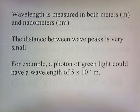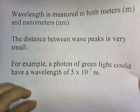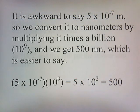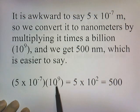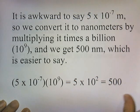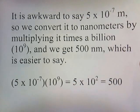Wavelength is measured in both meters and nanometers. The distance between wave peaks is very small in a photon — for example, a photon of green light could have a wavelength of 5 times 10 to the negative 7th meters. It's awkward to say that, so we convert it to nanometers by multiplying times a billion, giving us 500 nanometers. To convert meters to nanometers, just multiply by 10 to the 9th.